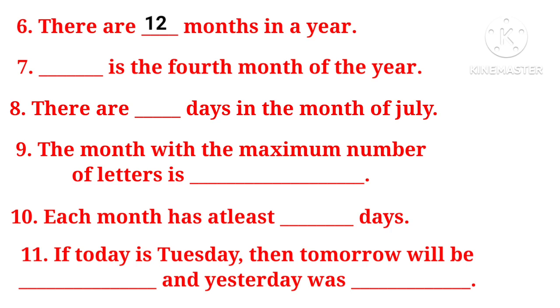There are dash days in the month of July. How many days does July have? 31 days.